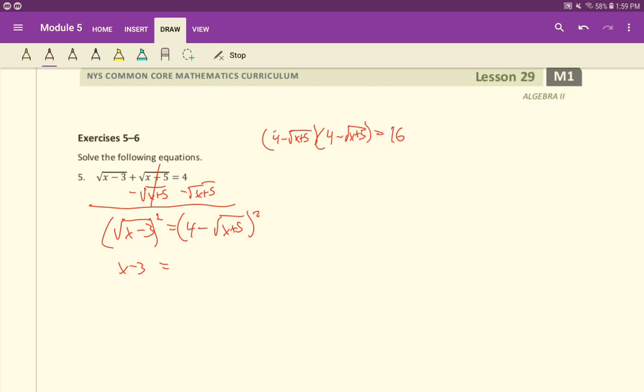So 4 minus root x plus 5 times 4 minus root x plus 5. When we multiply there, we're going to get 16, 4 times 4, and then 4 times minus root x plus 5. So minus 4 root x plus 5, minus 4 times root x plus 5. And then minus root x plus 5 times minus root x plus 5 is going to be a positive root x plus 5 squared. Let's combine some like terms over here.